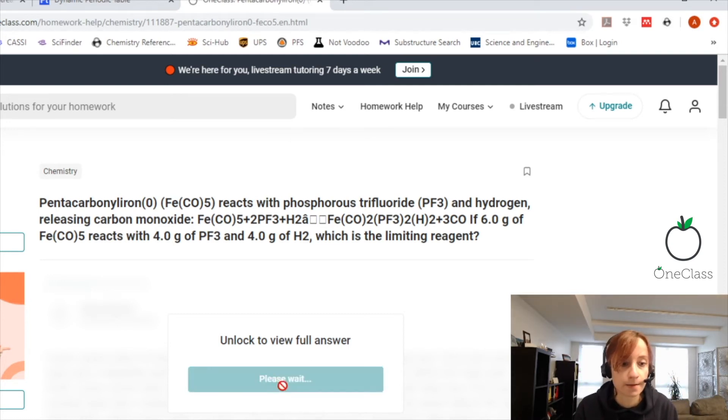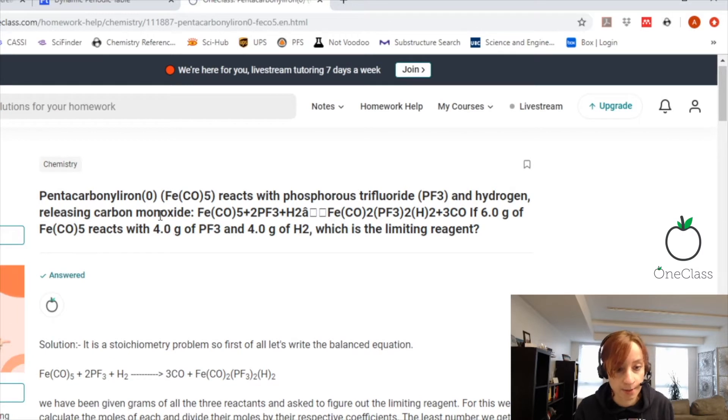So the question is asking, we have pentacarbonyl iron, which is FeCO5. Then we have it reacts with phosphorus trifluoride, PF3, and hydrogen, releasing carbon monoxide. So they already gave us the chemical formula, and it's balanced, which is great. We don't have to do that. So now we have 6 grams of iron pentacarbonyl, and it reacts with 4 grams of PF3 and 4 grams of H2. So now we need to figure out which is the limiting reagent.